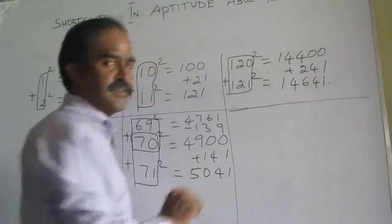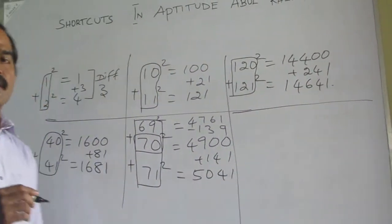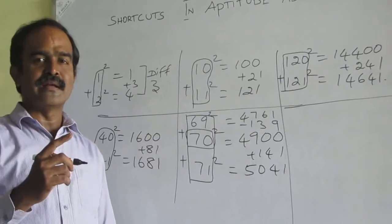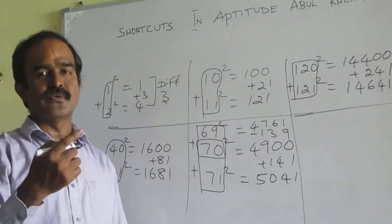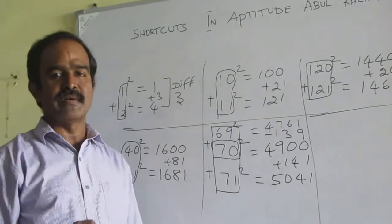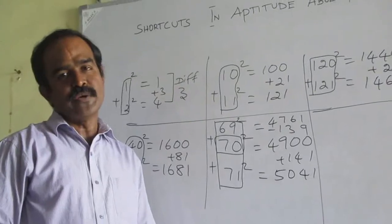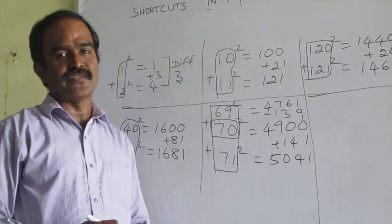So, what is the aim of this video? Whenever I know one square, I can tell the consecutive number's square immediately. Thanks for watching this video. Have a nice day.